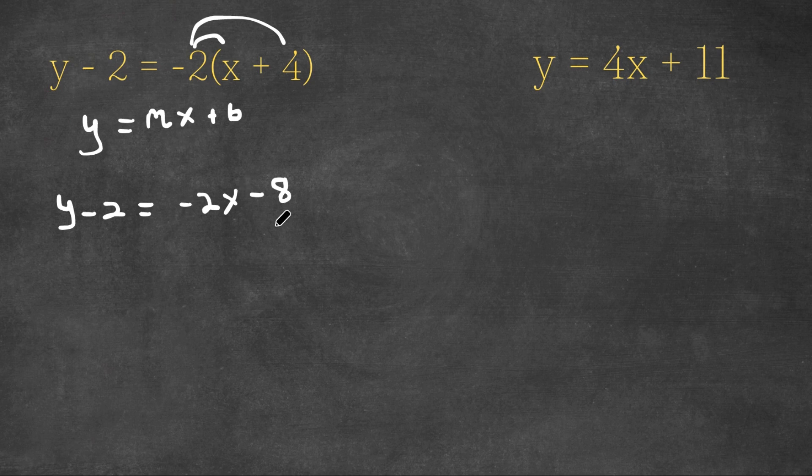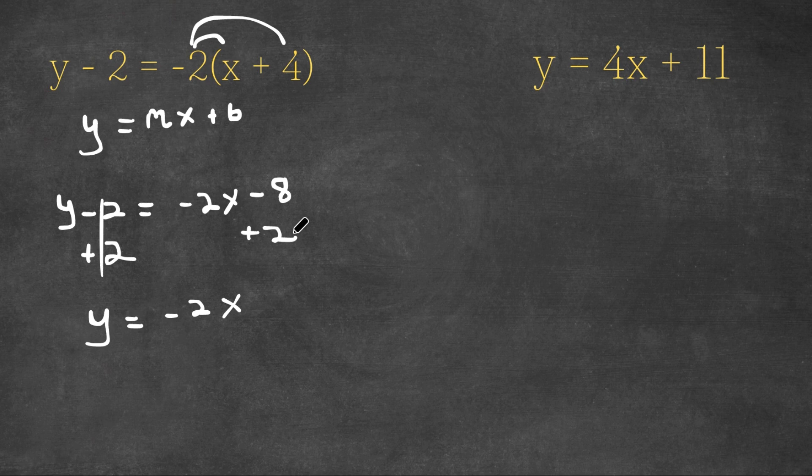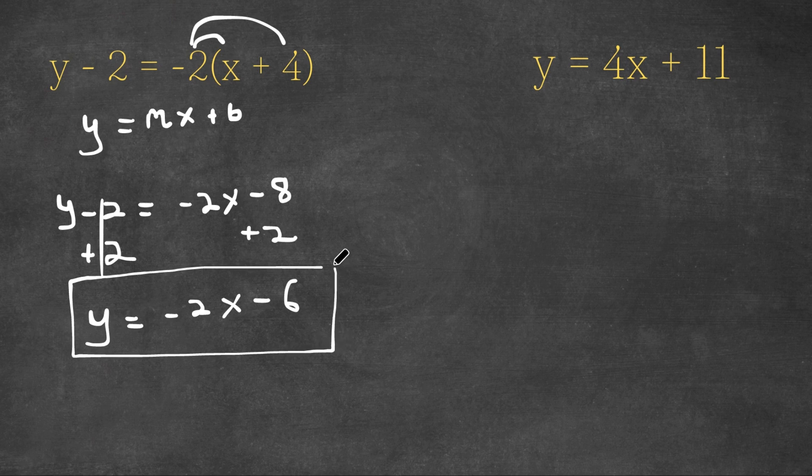So we have y minus 2 is equal to negative 2x minus 8. And the last thing we have to do is we want to isolate y, because it's just y alone. So we're going to move this 2 to our right-hand side. So now these two cancel out, and we get y is equal to negative 2x, and negative 8 plus 2 is negative 6. So this is our answer in slope intercept form.